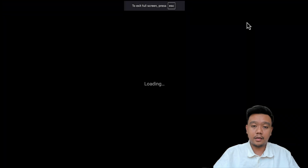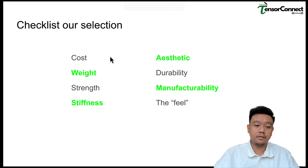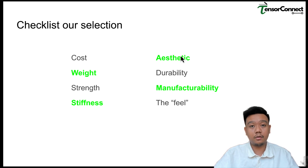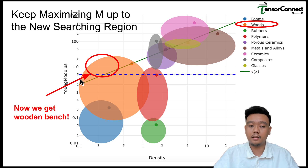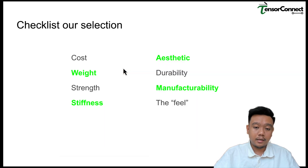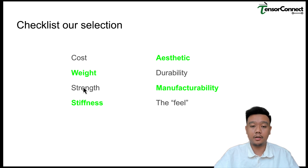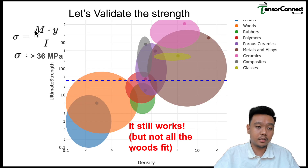We go back to our checklist from the first slide. We've addressed weight and stiffness. For aesthetics, wood offers a nice grain appearance. For manufacturability, ceramics would score poorly and composites are moderate, but wood scores well. We can also add a strength criterion by going back to our governing equation, using M·y/I to calculate the stress in the bench.